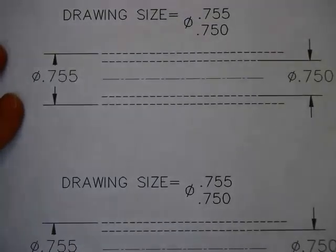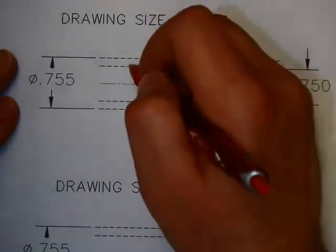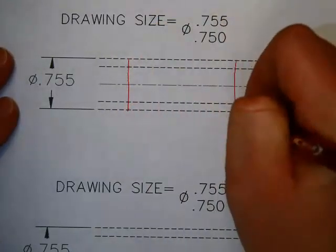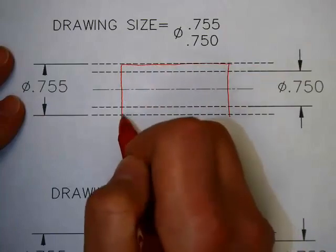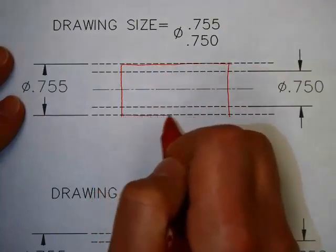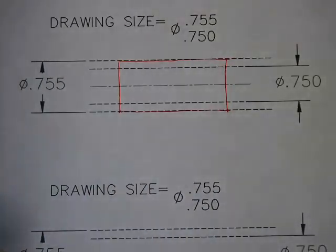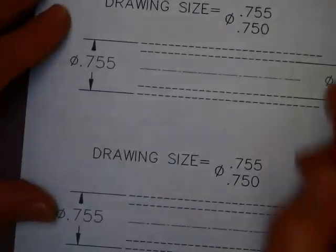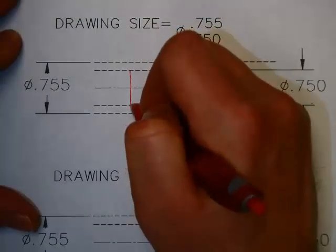So if it has to be between 0.75 and 0.755, assuming I draw this perfectly on the line and not outside of it, that's a good cylinder. It's inside that tolerance, right? This also.